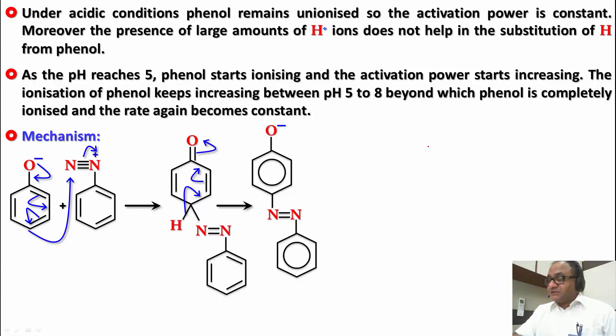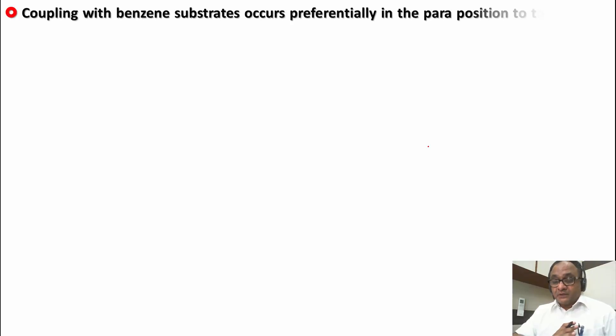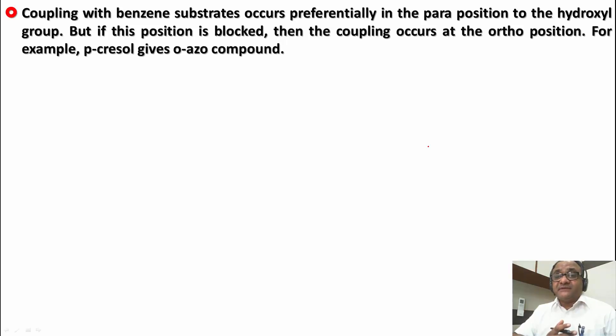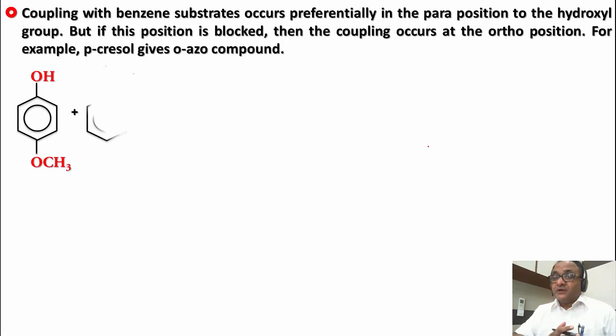The product is formed at the para position. Ortho substitution does occur, but para is always the major product because it is the least hindered position. But if the para position is blocked, then substitution occurs at the ortho position. For example, para-cresol has the para position blocked, so it reacts with the diazonium ion to give the ortho-azo compound.